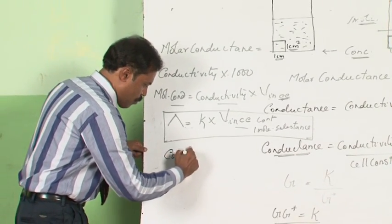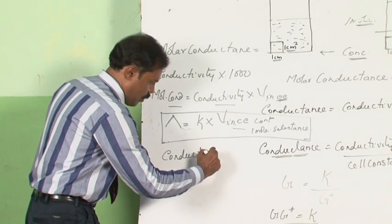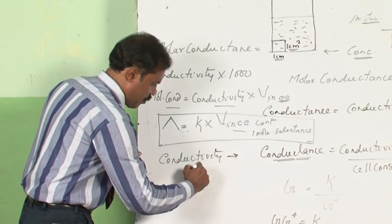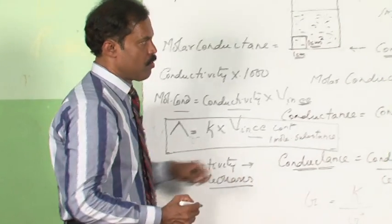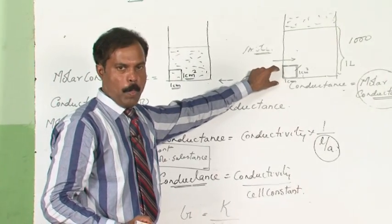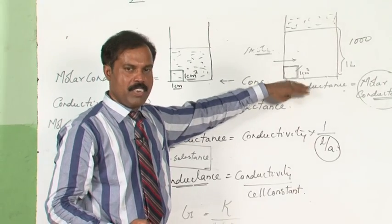Let it be any solution, the conductivity always decreases with dilution because number of particles per unit volume, which defines the conductivity, decreases.